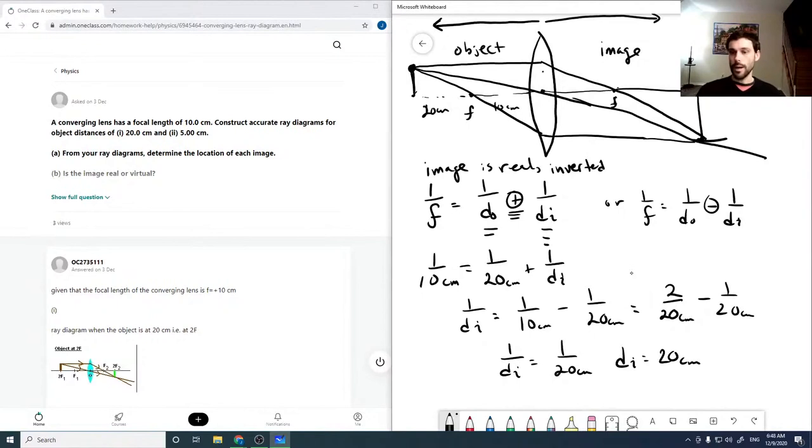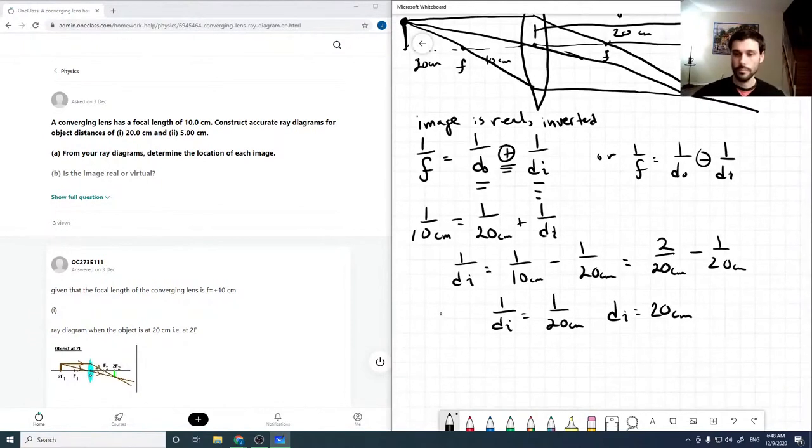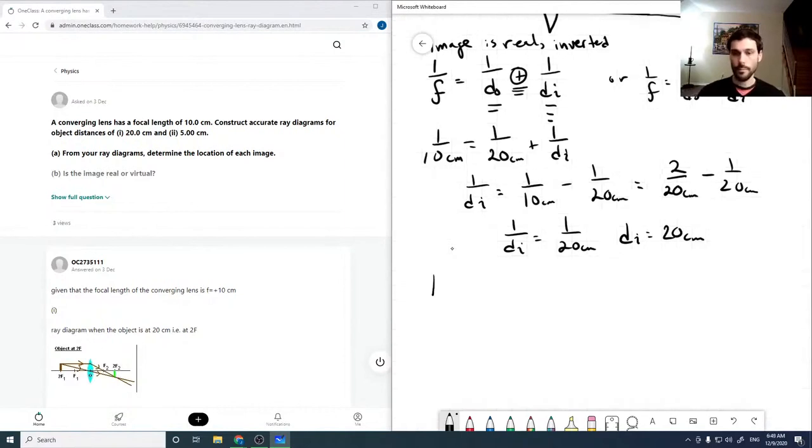So again, this will be positive, which it is for an image distance on the proper side, which is this side. And so the magnification is minus DI over D naught, which in this case is minus 20 over 20, which is equal to minus one. So it's an inverted image.